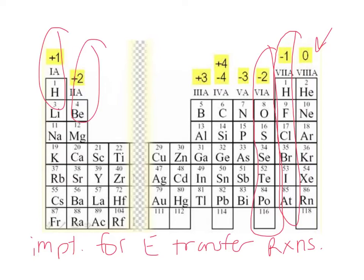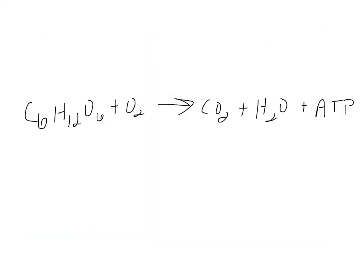NAD+ becomes NADH — it was called the shuttle bus back in freshman year, picking up electrons and taking them to the electron transport chain. In redox terms, NAD+ is an electron acceptor that gets reduced — it gains electrons. You can see NADH doesn't have that positive charge. While it gets electrons added to it, it's taking electrons from somewhere else, oxidizing whatever molecule it took those electrons from.